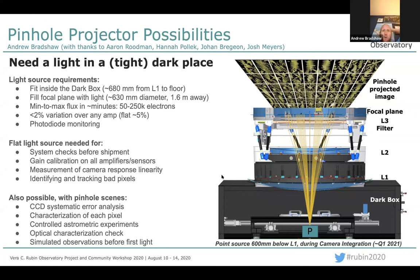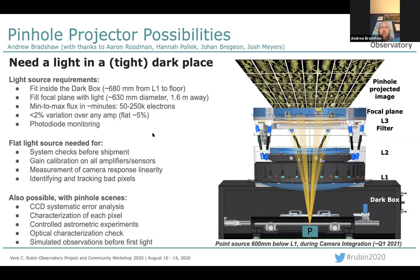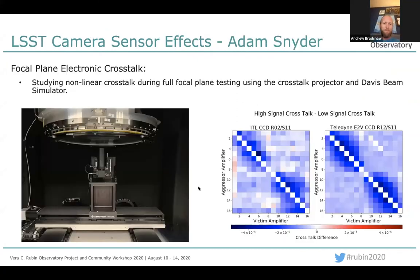This pinhole projector would live inside the dark box alongside a narrow beam that will characterize the optical properties of the camera including lenses. The dark box will have just over half a meter of clearance. We want to fill the entire focal plane uniformly in under 10 minutes with as little optical aberrations as possible — which lends itself to the pinhole design. For narrow-band flat fields, we plan to use an already available monochromator with a 10-millimeter aperture to check system requirements before shipping: gain calibration, linearity, and identifying bad pixels. For structured scenes, we can use a much smaller pinhole — perhaps 10 microns or smaller — with hundreds of watts, printing high-resolution images to characterize pixels, perform astrometric experiments, and simulate observations before first light.